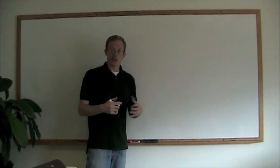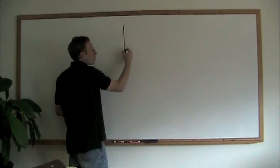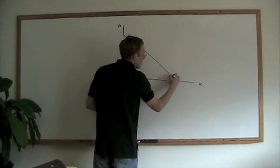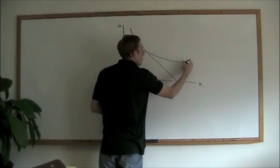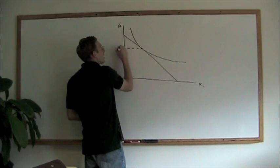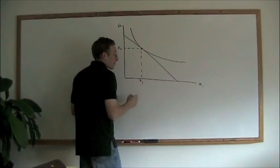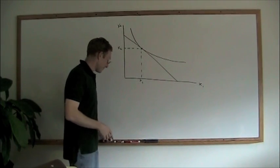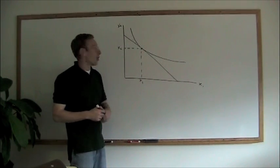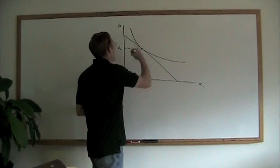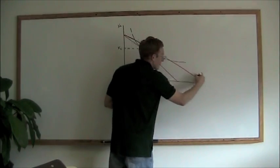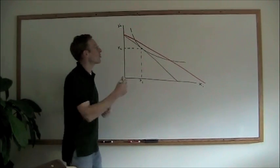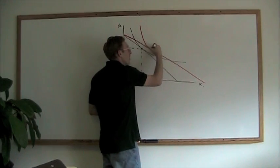Let's first take a look at the Slutsky approach. In this case, we're going to start off with a normal setup where we have our two goods, we have a budget constraint, and we have an indifference curve. And where those two lines are tangent, that is our optimality. Now if there is a change in the price of good x1 — if the price of x1 goes down, and this is a normal good — we have that shifted out, and we should see an increase in the amount of x1 that gets consumed.